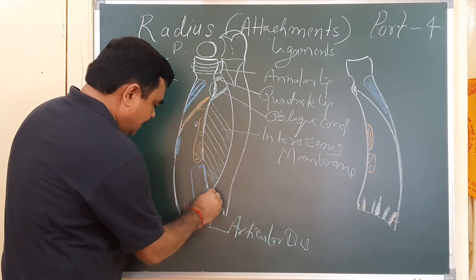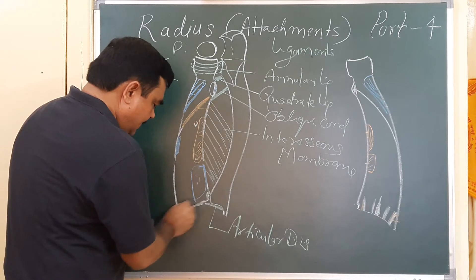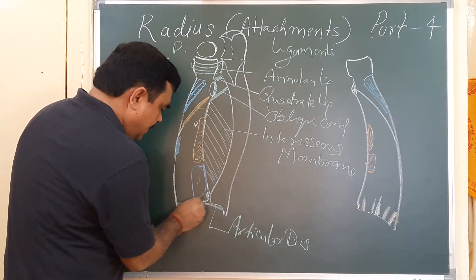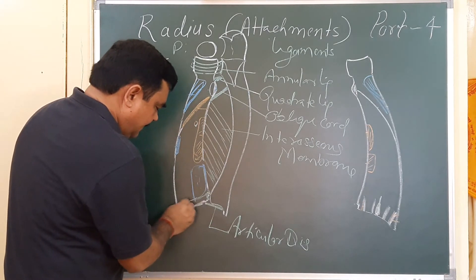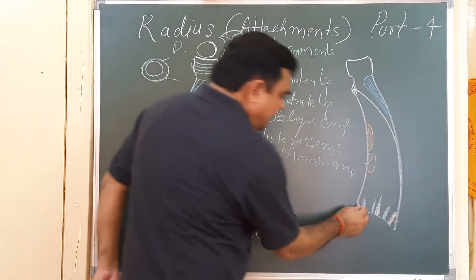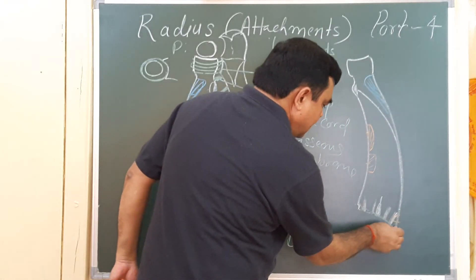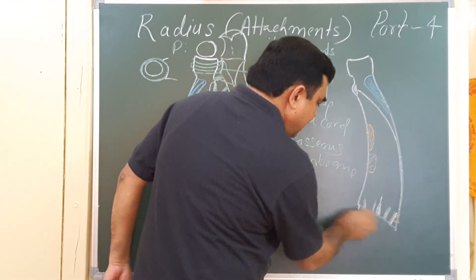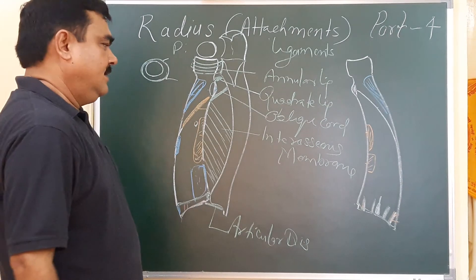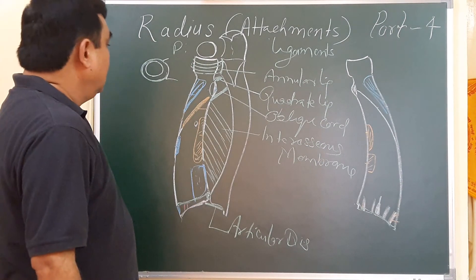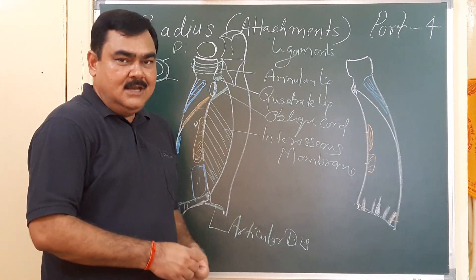Here is the capsular ligament. Here is the position of attachment of the capsular ligament, along the margin of the distal end of the radius. These are the attachments of the ligaments.